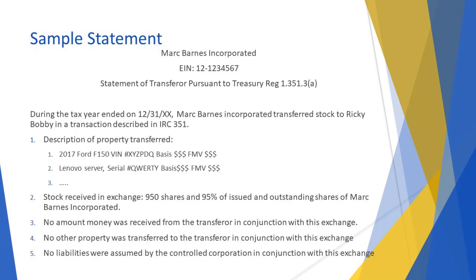Here's a sample statement. The header contains the name of the new or existing corporation and their EIN. Next is the statement about the treasury regulation you are complying with. The next line gets into the meat of the statement: 'During the tax year ended 12-31 of the current year, Mark Barnes Inc. transferred stock to Ricky Bobby in a transaction described in Internal Revenue Code section 351.'